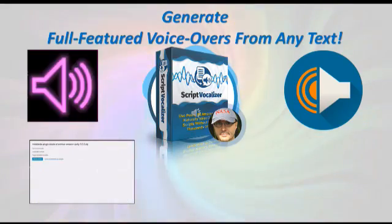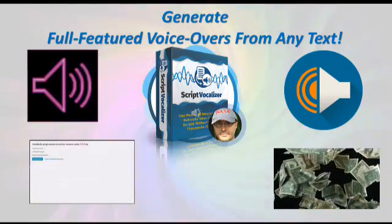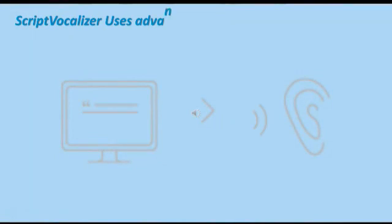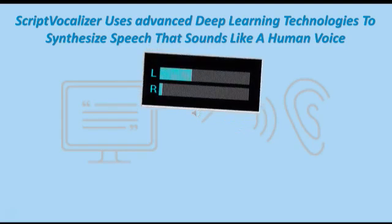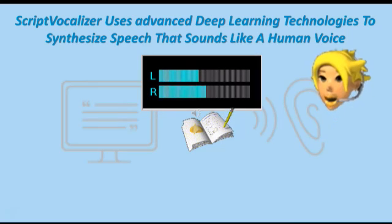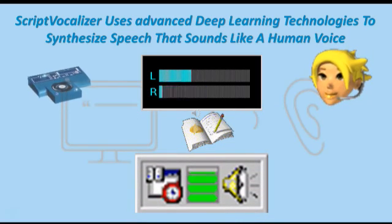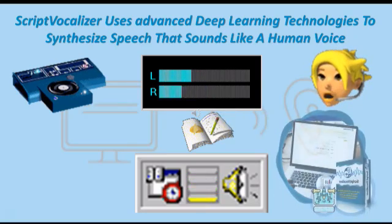You simply paste your text into Script Vocalizer. Even beginners can generate professional sounding voiceovers in just a few seconds. Amazon Polly is the number one text-to-speech engine which uses advanced deep learning technologies to synthesize speech that sounds like a human voice. However, Amazon's hi-tech engine is impossible to access without an authorized app which has raw and direct access to Amazon Polly with restricted API. This is where Script Vocalizer comes in.